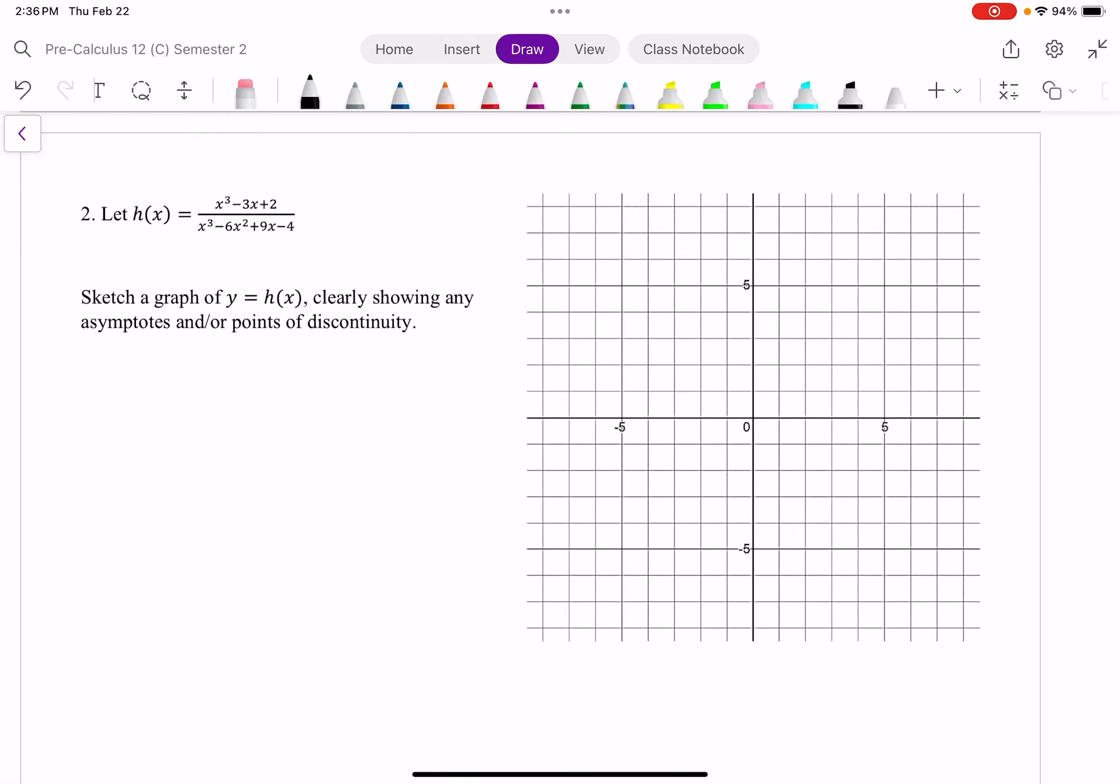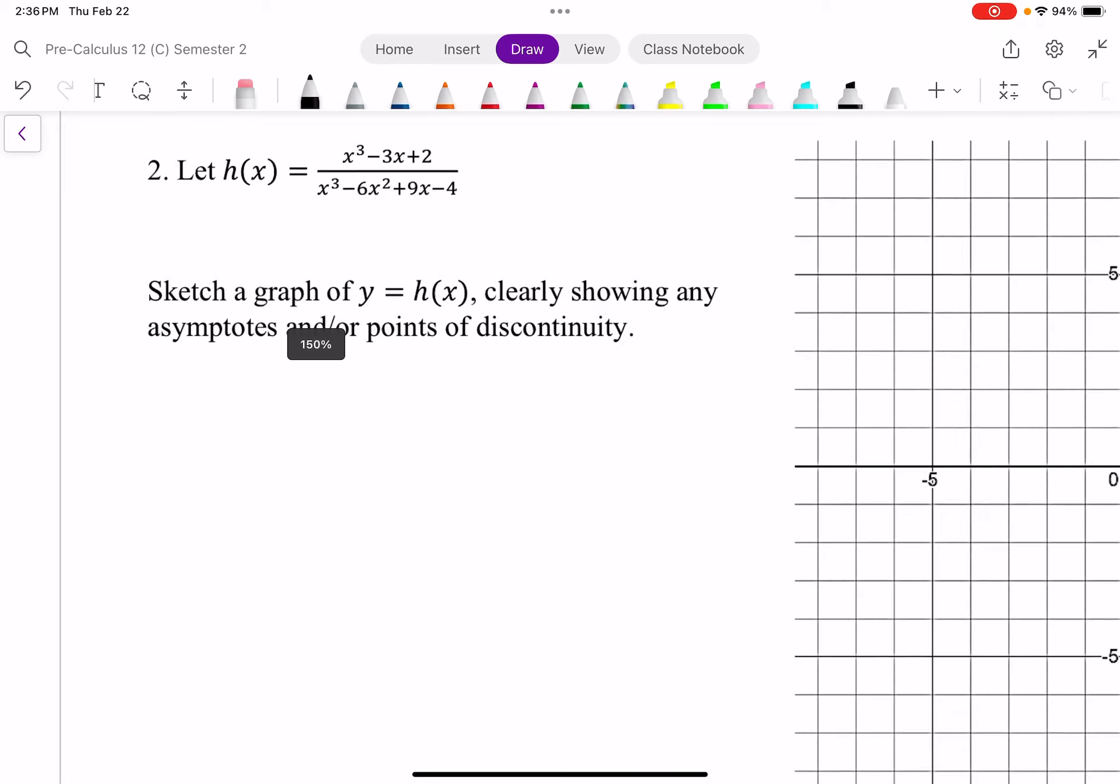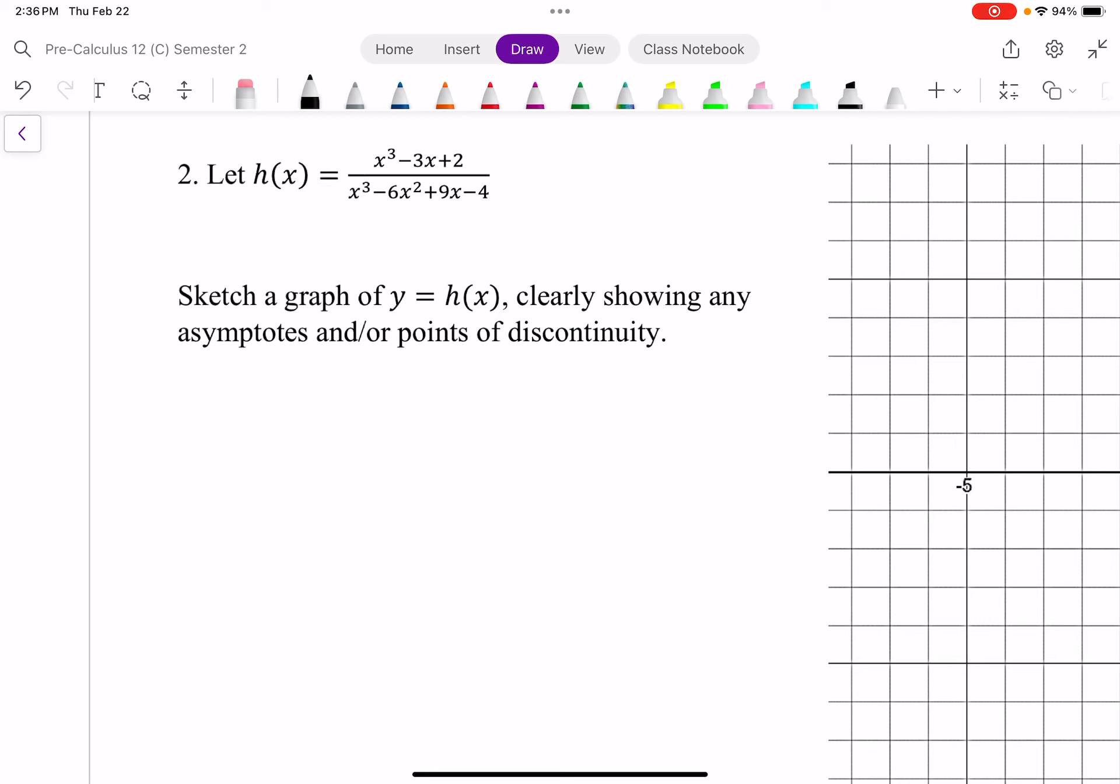All right, I want to look at this rational function, and I want to sketch it, showing any types of discontinuities. Well, I got a cubic function divided by another cubic function. And if I am going to be able to visualize this, I need to be able to factor it and see if it simplifies.